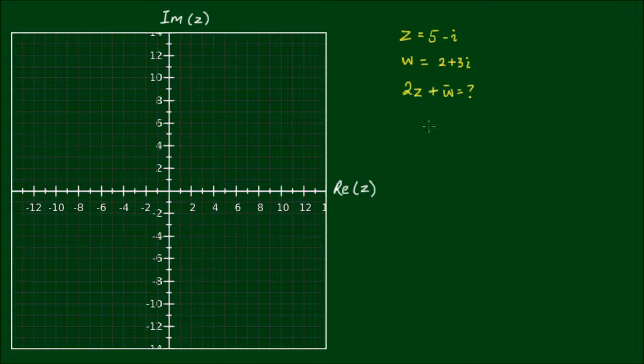So the first step is I want to represent 2z on the complex plane. So 2z is equal to 2 multiplied by 5 minus i, and that is equal to 10 minus 2i.